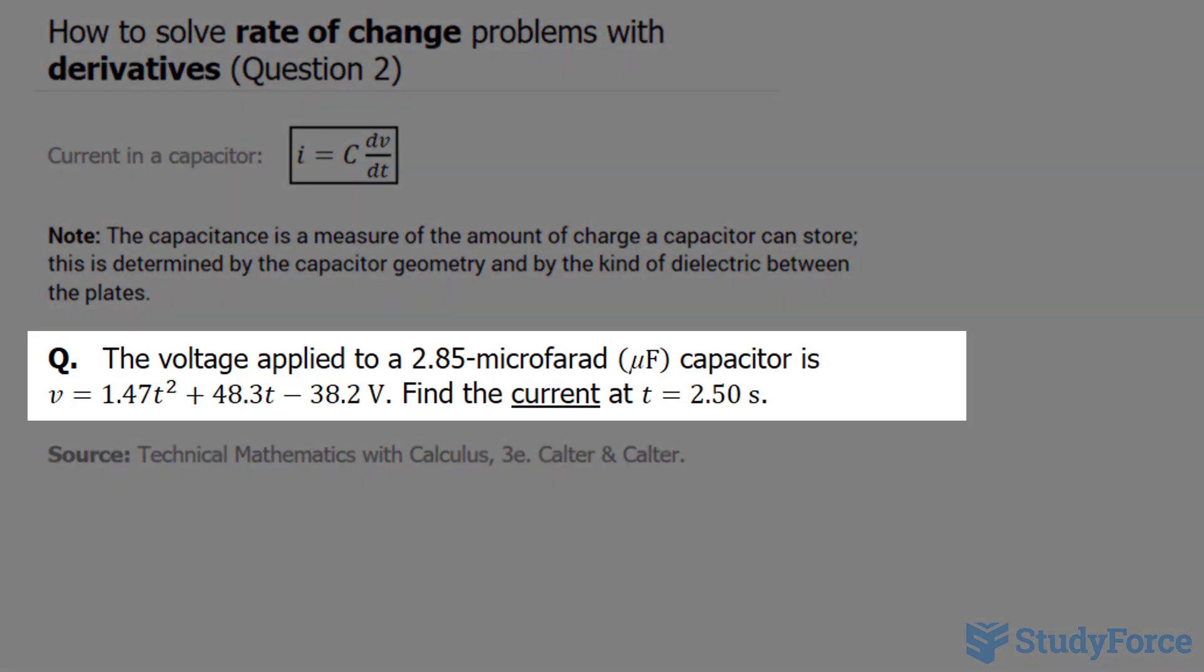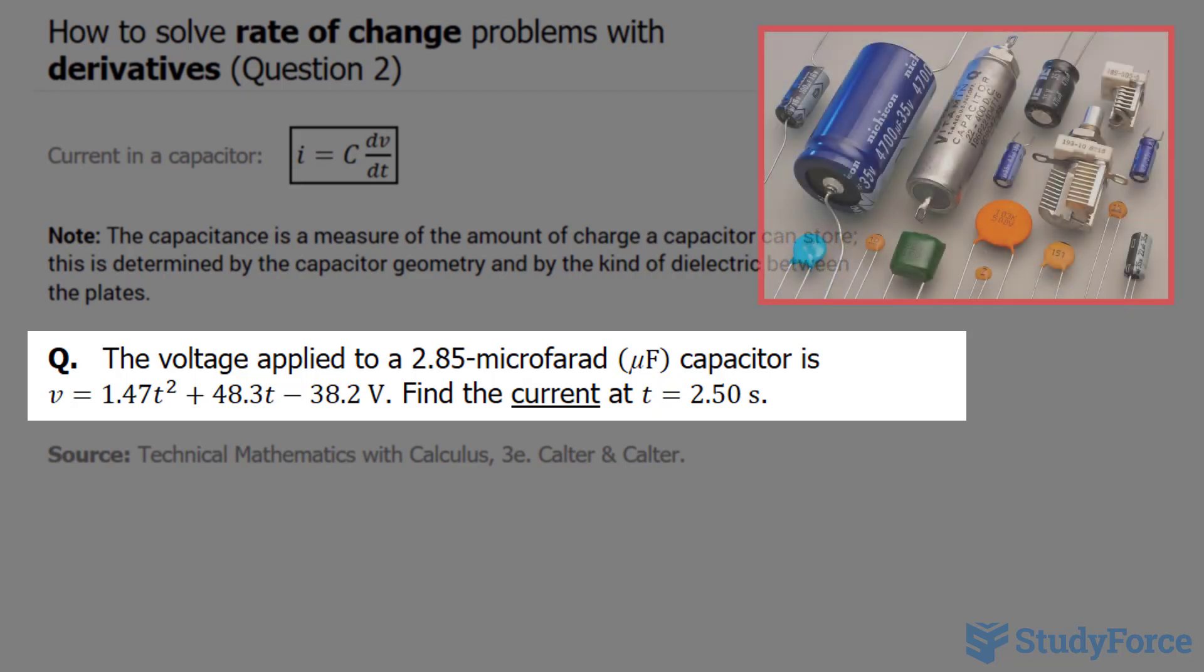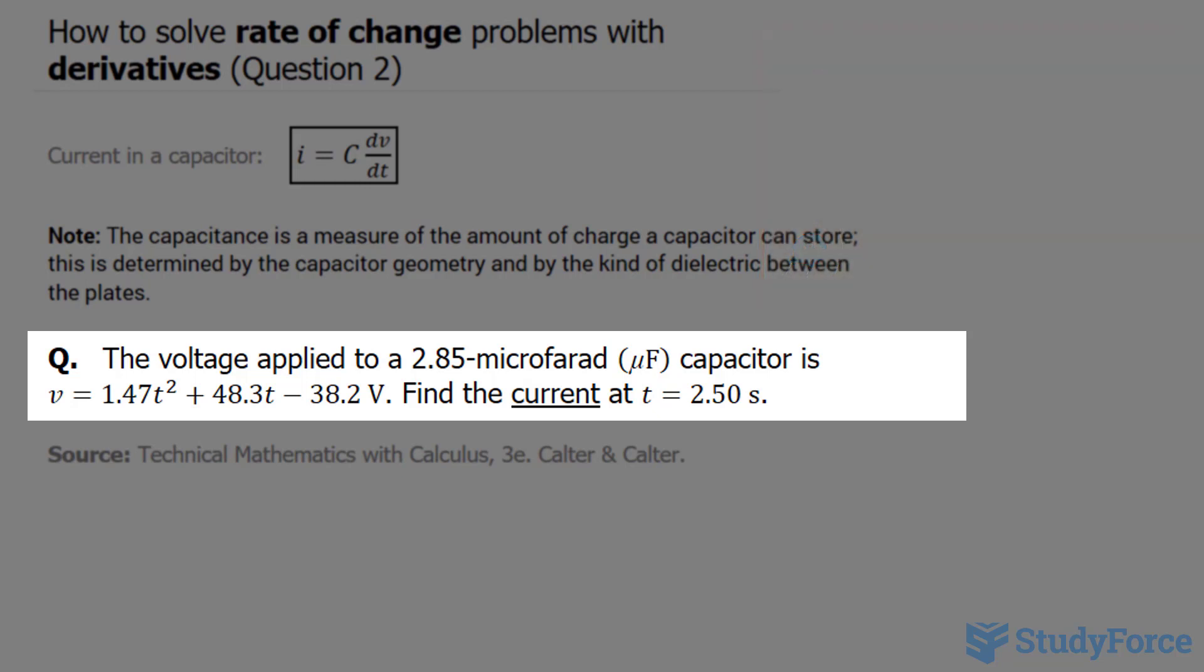The question reads: the voltage applied to a 2.85 microfarad capacitor is represented by the equation V equals 1.47T² plus 48.3T minus 38.2. Find the current when T equals 2.50.